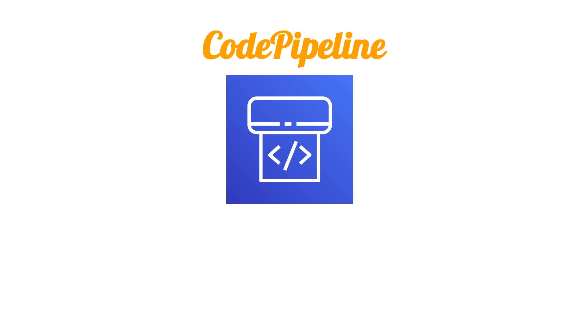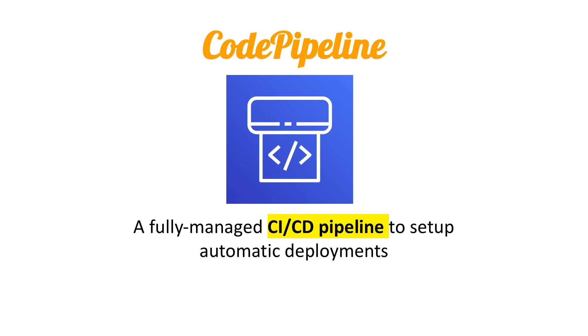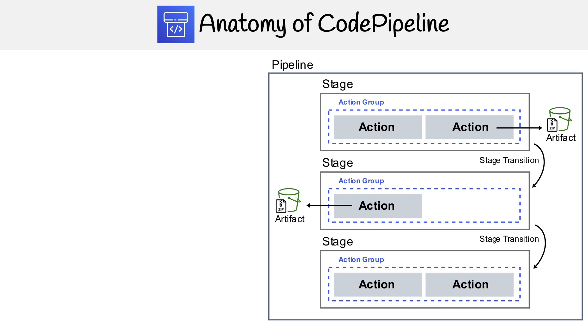Hey, this is Andrew Brown from ExamPro. We are looking at CodePipeline, which is a fully managed CI/CD pipeline to set up automatic deployments. Let's look at the anatomy of a CodePipeline. Here I have a technical architecture that has all the components, and starting at the top, we're going to look at the pipeline itself, which is what encompasses all the components.